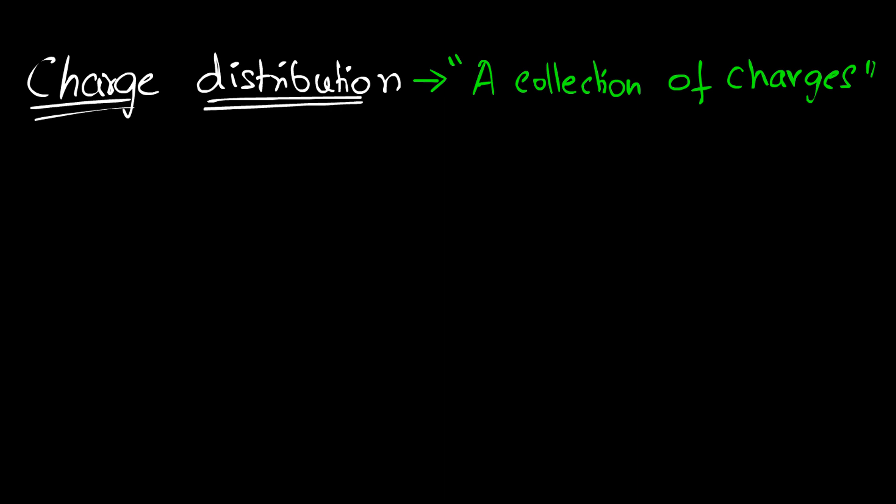We have already seen charge distributions before. We saw a charge distribution of two charges, we saw a dipole, we calculated electric field last time due to three charges. All those are charge distributions. But a distribution can be classified into two kinds.